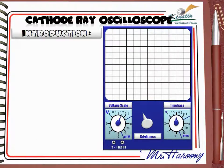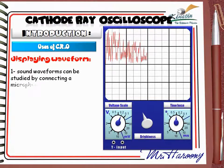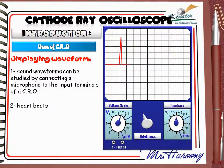ده رسم توضيحي بسيط بيمثل الـ interface لجهاز الـ Cathode Ray Oscilloscope. من uses الـ CRO: رقم 1 هو displaying waveforms زي الـ sound مثلاً. لو وصلنا microphone بجهاز الـ CRO، أقدر أرسم تفاصيل الصوت - امتى بيعلى وامتى بيوطى. Sound waveforms can be studied by connecting a microphone to the input terminals of a CRO.